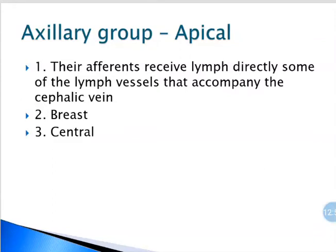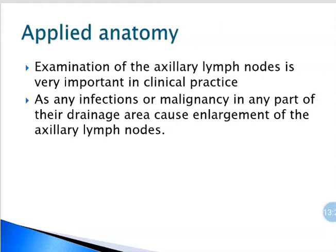For the apical group, their afferents receive lymph directly from some lymph vessels that accompany the cephalic vein, so cephalic vein lymphatics drain directly into apical lymph nodes. They also receive from the breast and from the central group, which in turn receives from the lateral, anterior and posterior groups. The examination of axillary lymph nodes is very important in clinical practice, as any infections or malignancy in any part of the drainage area cause enlargement of the axillary nodes.